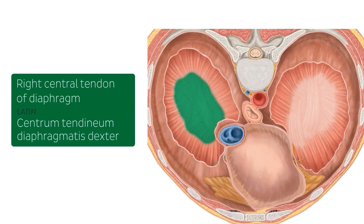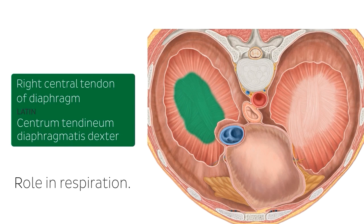The central tendon plays a role in respiration. Contraction of your diaphragm during respiration draws the central tendon inferiorly, which partially flattens the dome of the diaphragm. This results in lowering of intrathoracic pressure and therefore enlargement of the thoracic cavity, allowing air to enter your lungs.